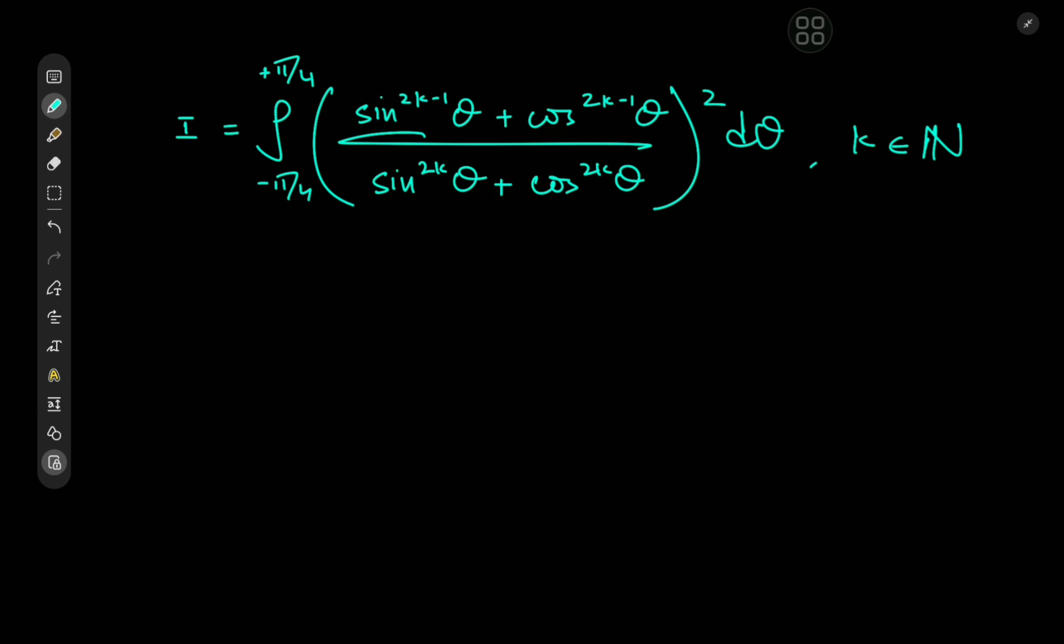Anyway, we have more important things to deal with right now, including the solution development for this very cool integral. We have the integral from -π/4 to π/4 of (sin^(2k-1)θ + cos^(2k-1)θ) / (sin^(2k)θ + cos^(2k)θ)^2 dθ, where k is a positive integer. It definitely looks like something, so it's going to be fun to evaluate.